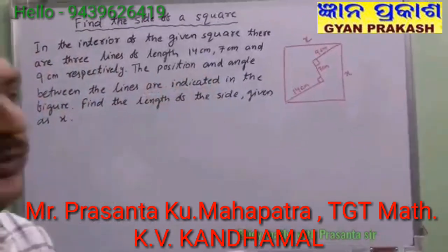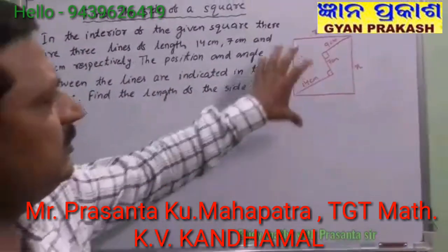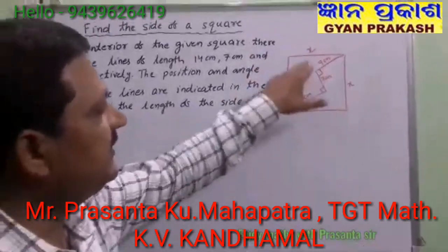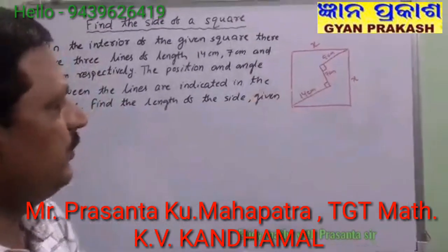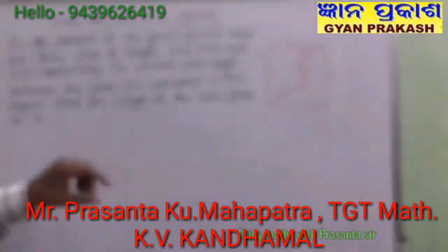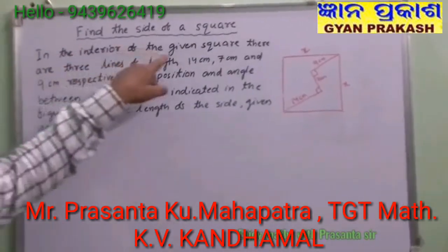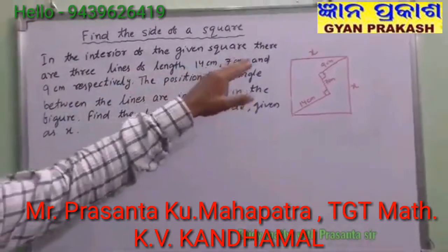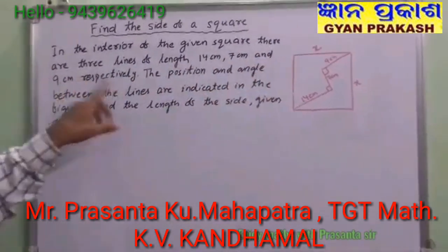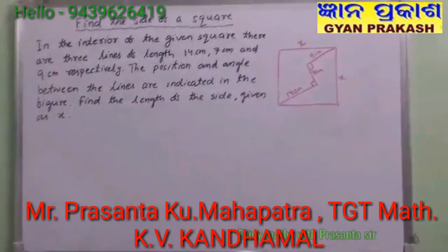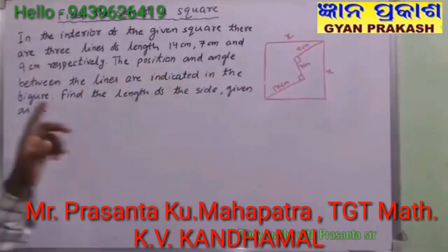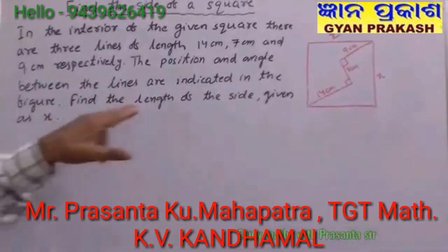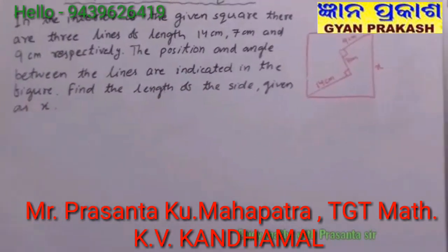This is a very important question. If you look at it, there are some lines inside this square. The question is: in the interior of the given square, there are 3 lines of length 14 cm, 7 cm, and 9 cm respectively. The position and angle between the lines are indicated in the figure. Find the length of the side given as x.